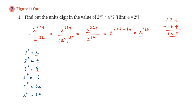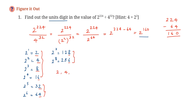Let's verify: 2 to the power 7 is 64 times 2, which is 128 — units digit 8. Wait, let's check further. 2 to the power 7 is 128 and 2 to the power 8 is 256. Looking at the units digits, we have 2, 4, 8, 6 — this is the cycle. It repeats with a cycle of 4 numbers.